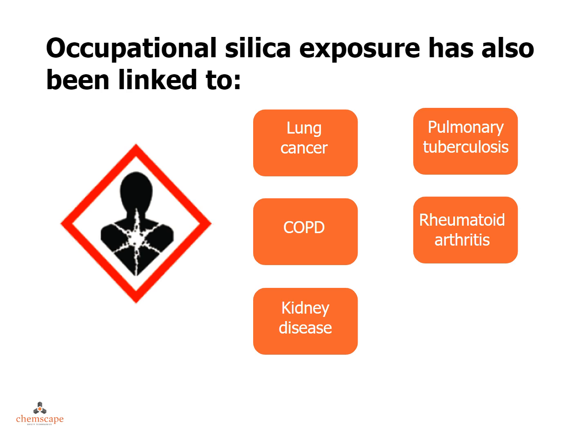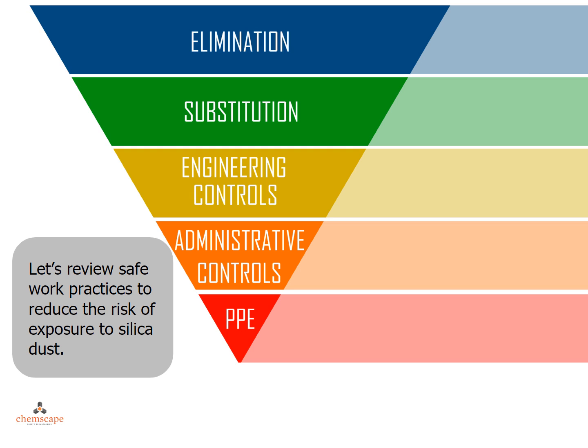Besides silicosis, occupational silica exposure has also been linked to lung cancer, pulmonary tuberculosis, chronic obstructive pulmonary disease, rheumatoid arthritis, and kidney disease. Using the hierarchy of controls, let's review safe work practices to reduce the risk of exposure to silica dust.